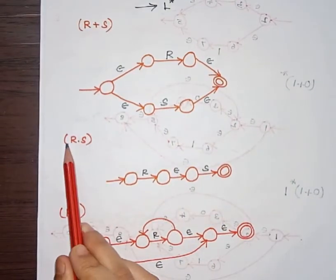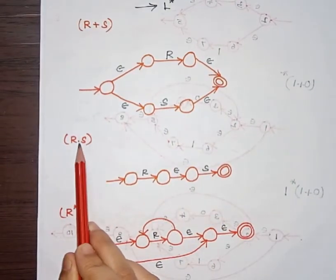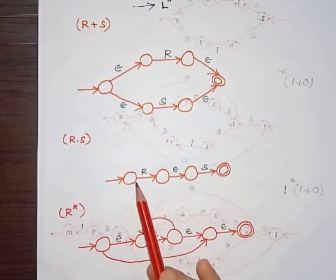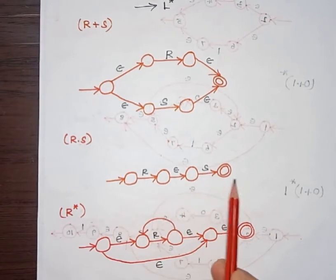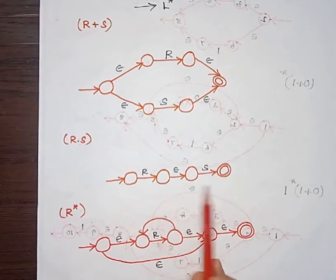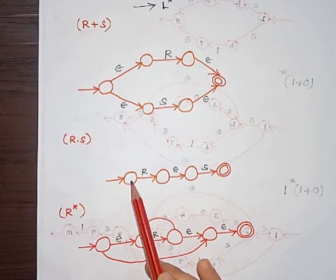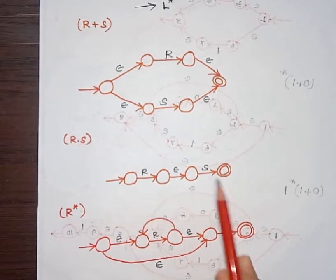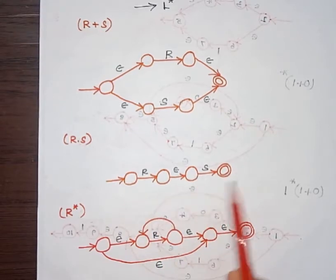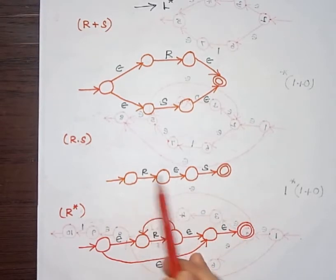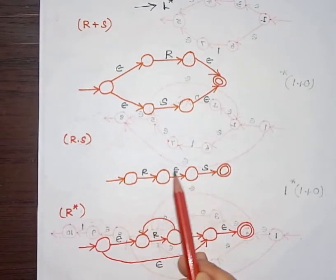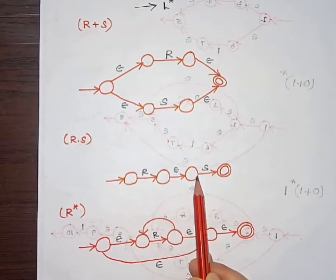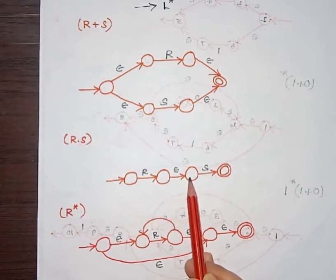If it is concatenation, then this is how we represent it. There is a transition between two sets of states on input symbols R and S, and in between these we have one more transition on epsilon.